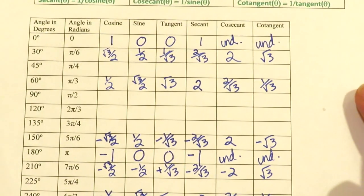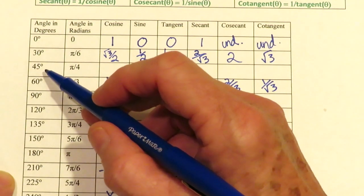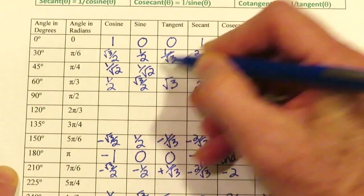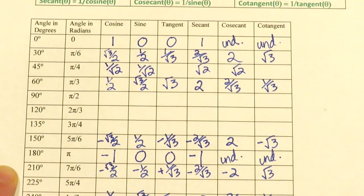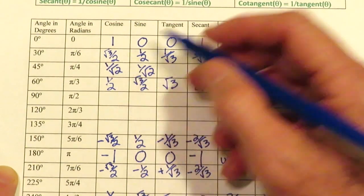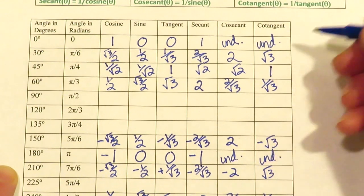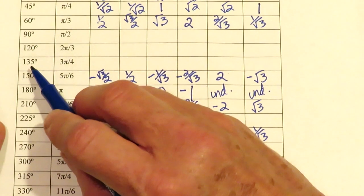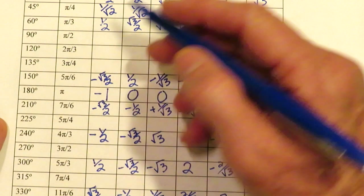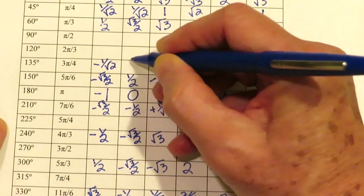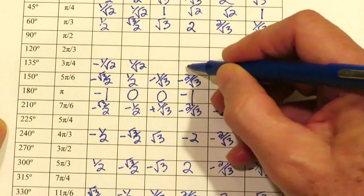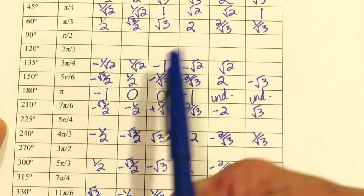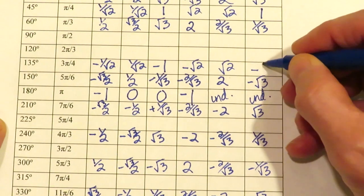Looking at 45 degrees: in a 45-45-90 triangle, x and y have to be the same value because both angles are 45. That value is 1 over the square root of 2, and their reciprocals are the square root of 2. Because x and y are the same, y divided by x equals 1, and the reciprocal of 1 is 1. For 135 degrees, which matches 45, I'm 45 degrees from the negative x-axis. X is negative but y is positive, so secant is negative, cosecant is positive, tangent is negative, and cotangent is also negative.